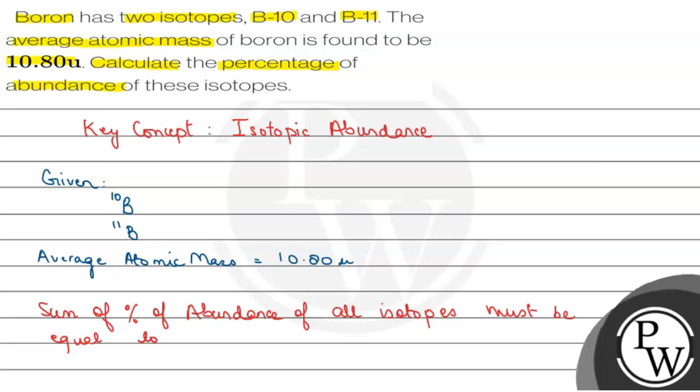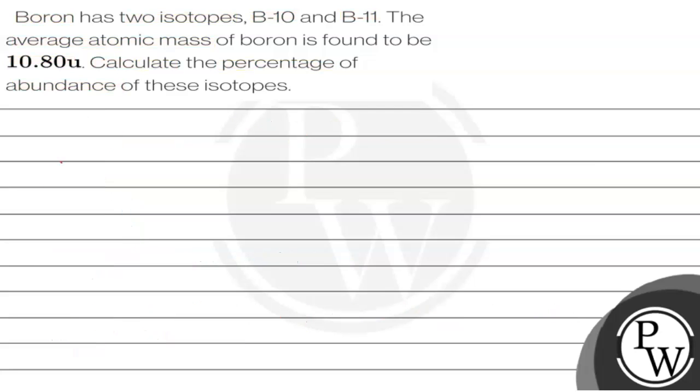So now let's solve the question. Two isotopes are present: B-10 and B-11. Let us assume, let the percentage abundance of B-10 isotope be x percent.